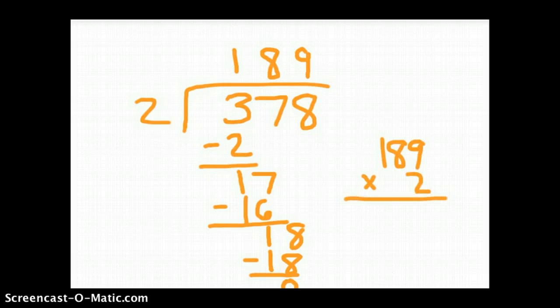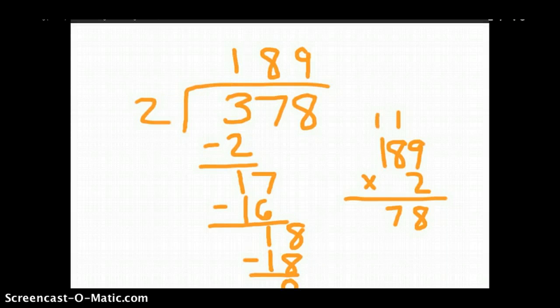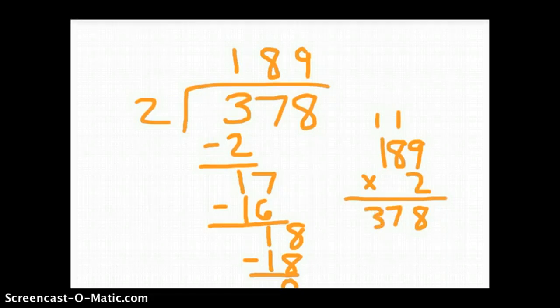For our check, we take our answer, 189, and multiply it by the divisor, which is 2. 2 times 9, which is 18. 8, regroup the 1. 2 times 8 is 16, plus 1 is 17. 2 times 1 is 2, plus 1 is 3. So our answer checks.